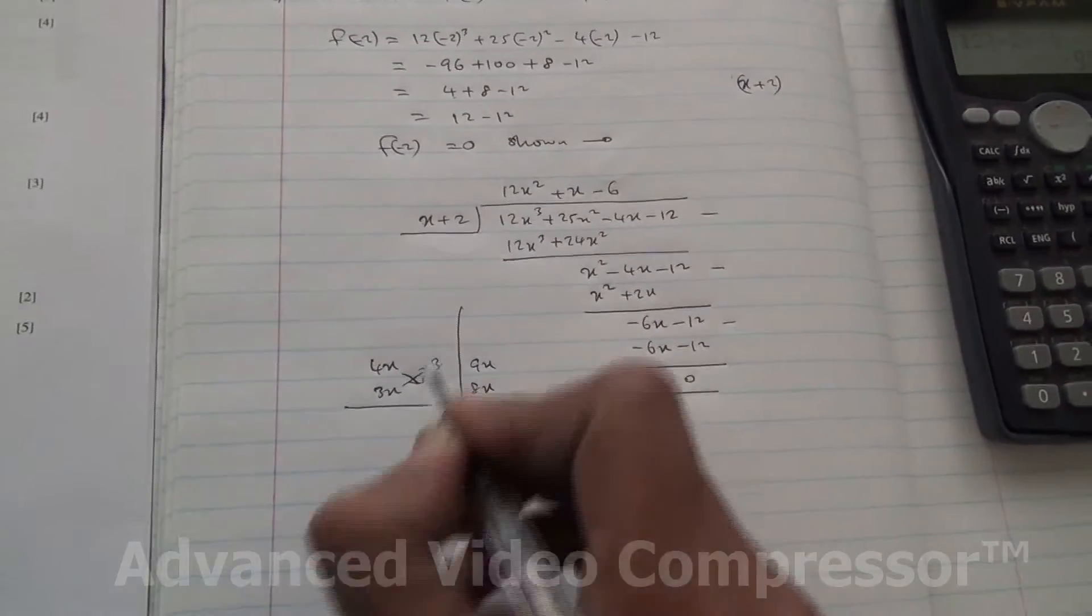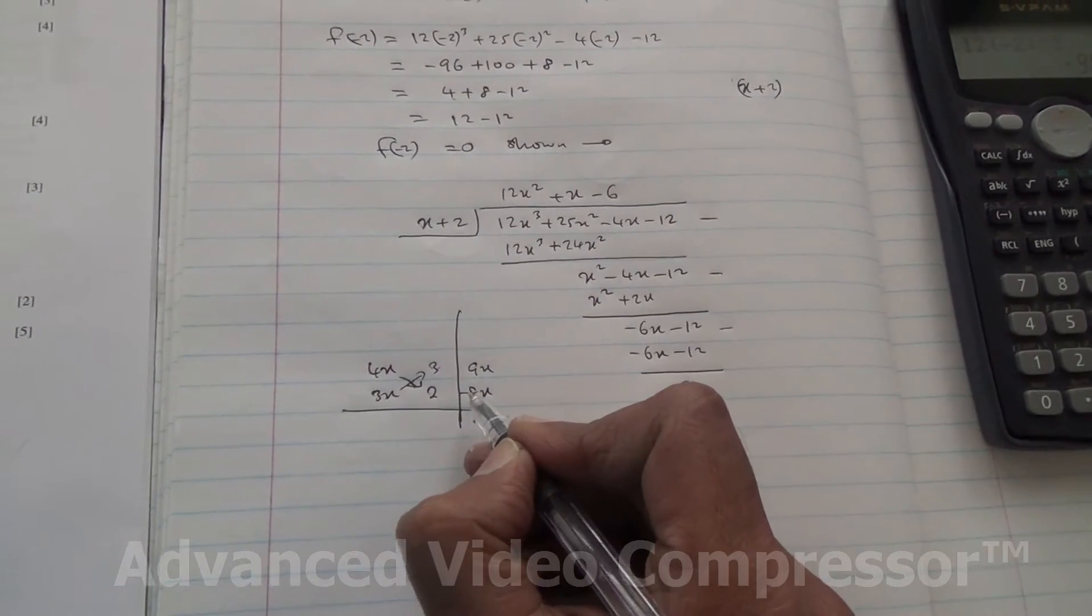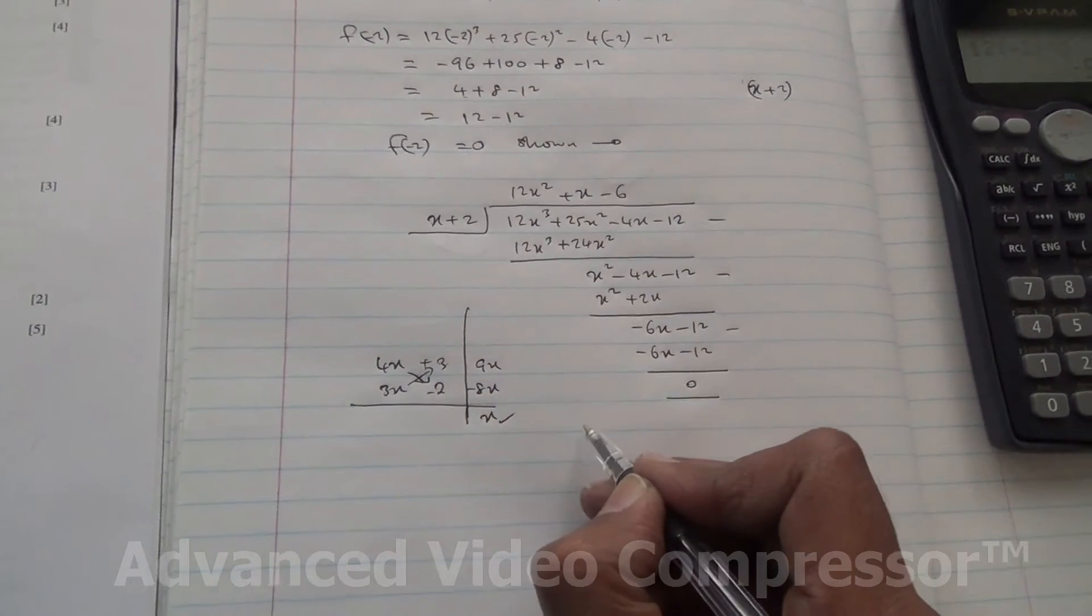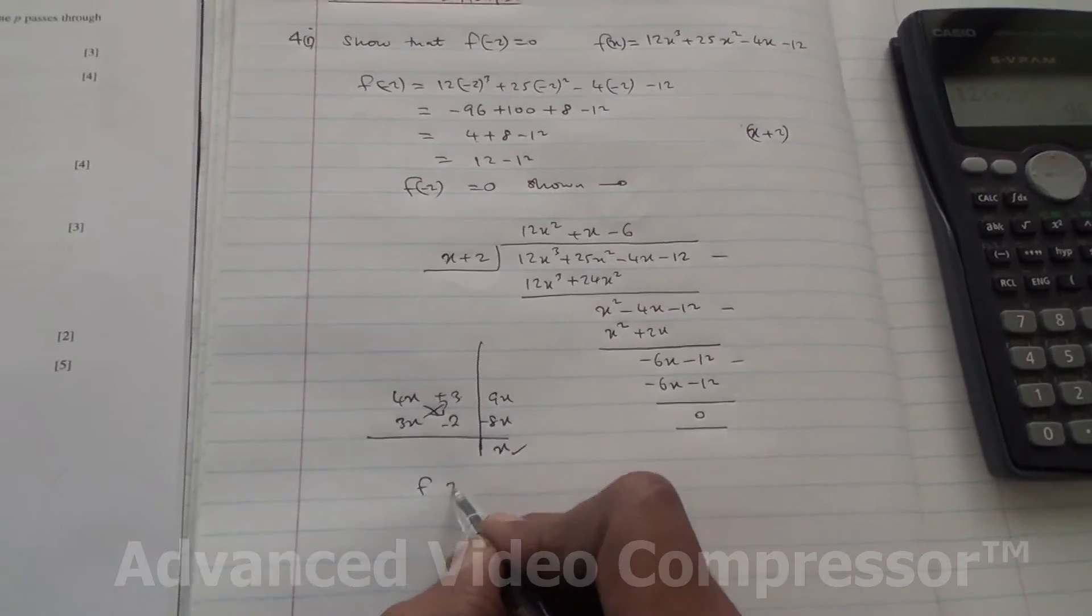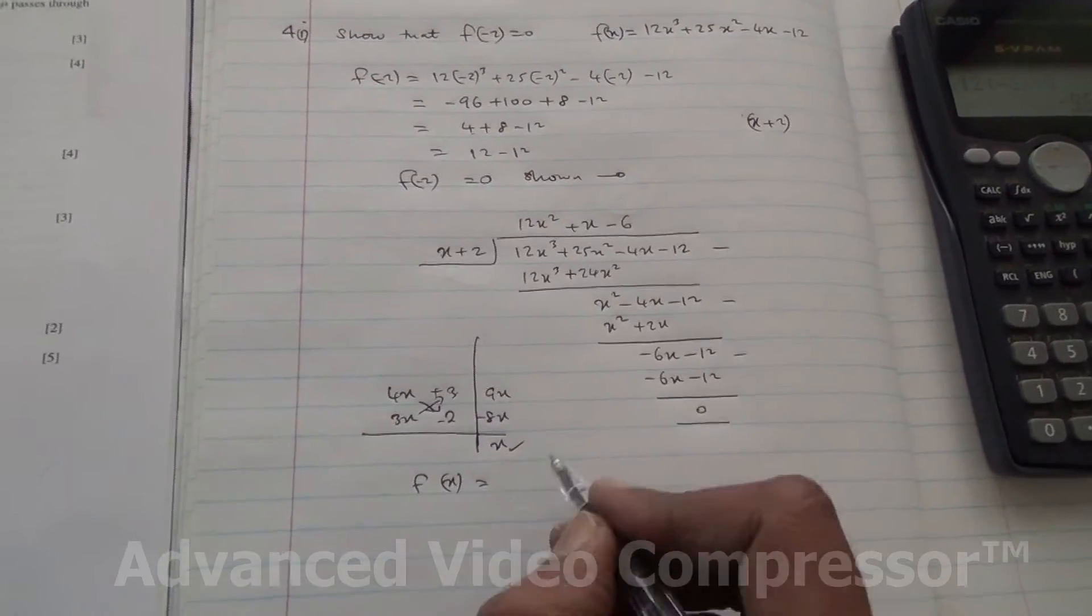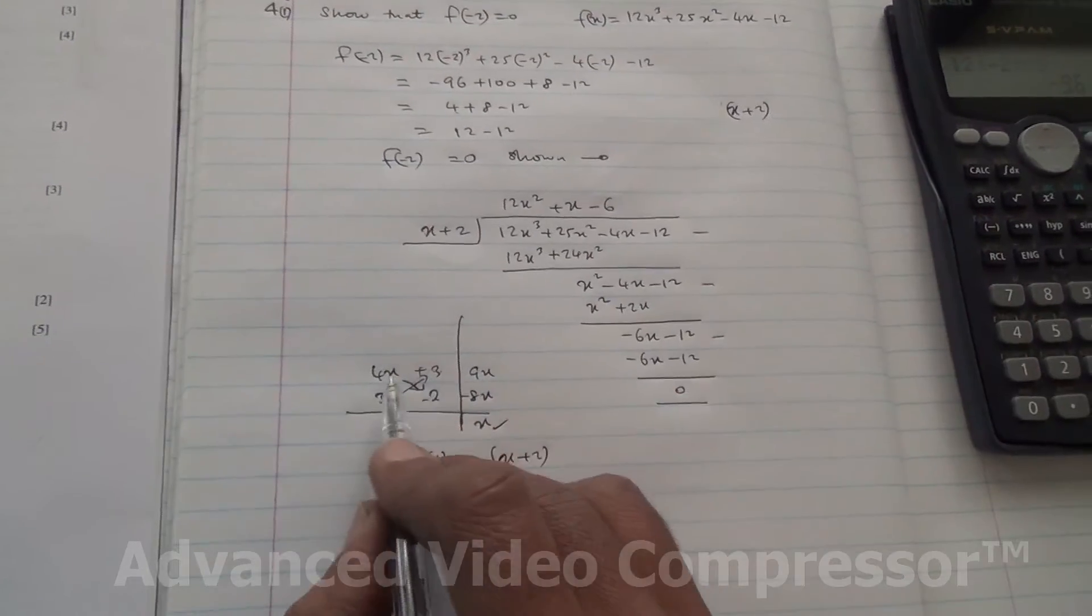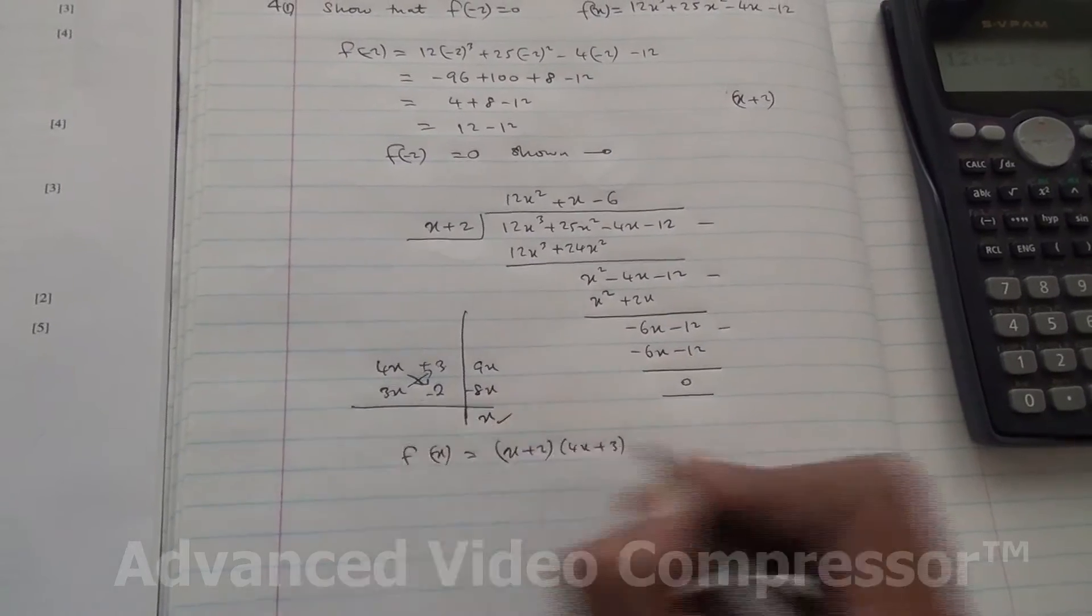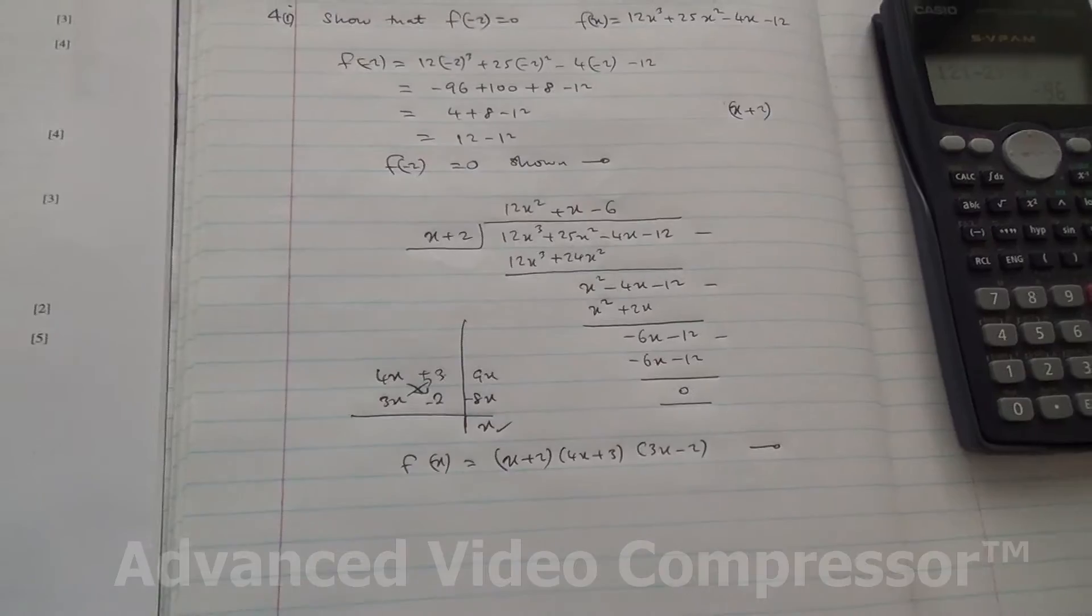So this one is confirmed, so this is minus, because we're taking away 8, so if this is minus, this one is going to be minus, so we have plus, and therefore the expression f(x) is going to be (x plus 2) then you've got (4x plus 3) then you've got (3x minus 2), so that expression has been factorized completely.